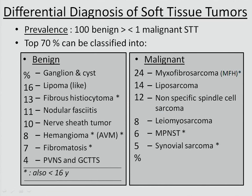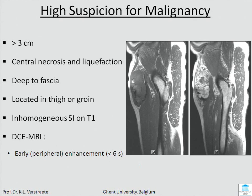Here you have examples of frequencies. Lipoma is a very frequent lesion in the benign category, and myxofibrosarcoma is frequent in the malignant part. For signs of malignancy: if you have a lesion more than three centimeters with central necrosis, deep to fascia, located in the thigh or groin, inhomogeneous on T1, and early and fast enhancement on dynamic MRI, then you can say this is very likely a malignant lesion.